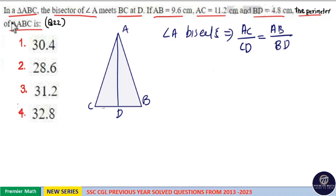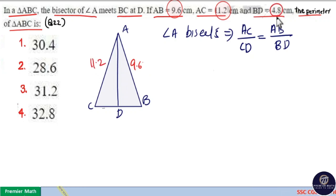Now, with this, you can solve this question. That is, here AB is equal to 9.6 cm and AC is equal to 11.2 cm, BD is equal to 4.8 cm.